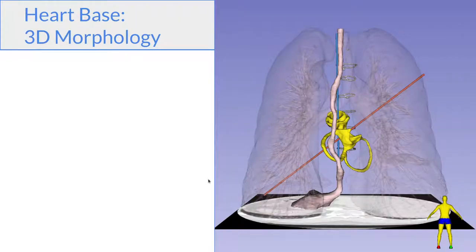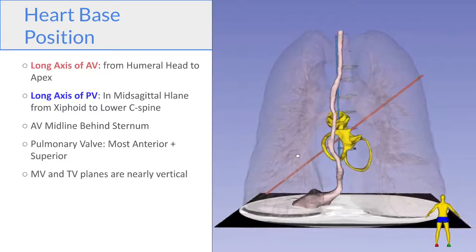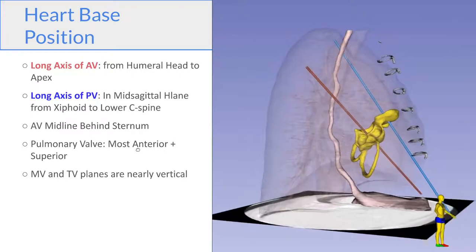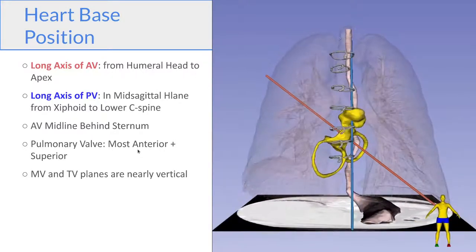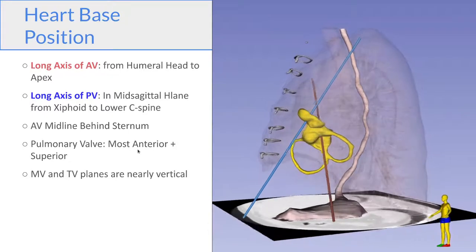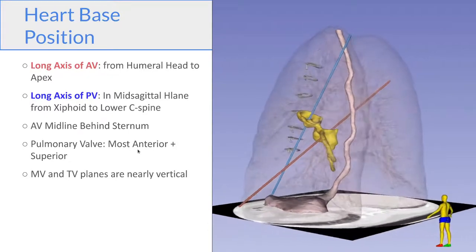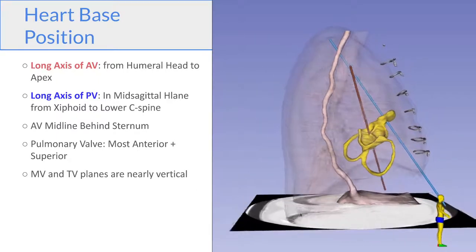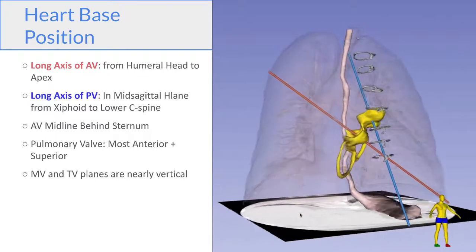And here we have the posterior view that's kind of our vantage point with TEE. And you can see the esophagus where the TEE probe would be traveling along. So here behind the mitral valve annulus would be left atrium. So that's our mid-esophageal window there. And now to locate the heart base, you can see that the aortic valve is directly behind the sternum and that the planes of the mitral and tricuspid valves are essentially vertical. So you should be able to visualize the heart base inside a patient's chest.